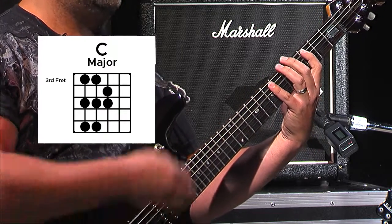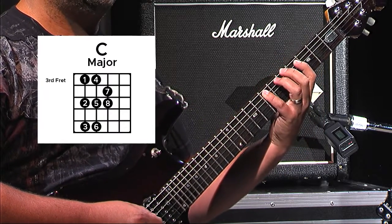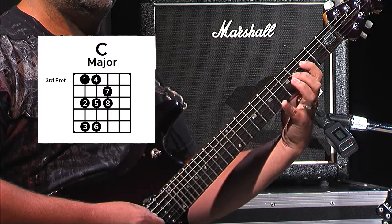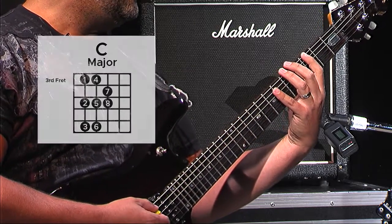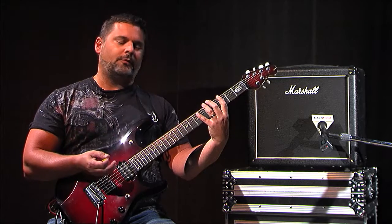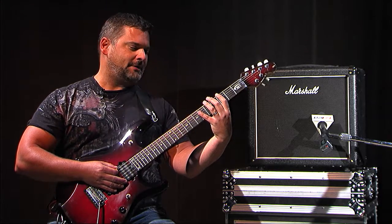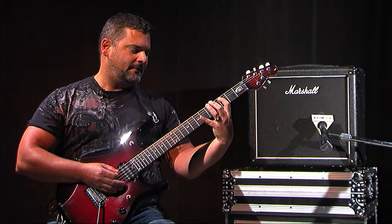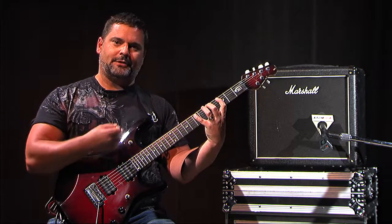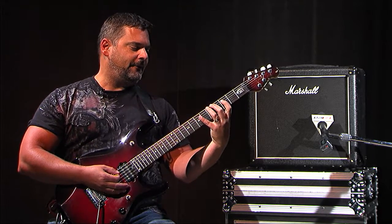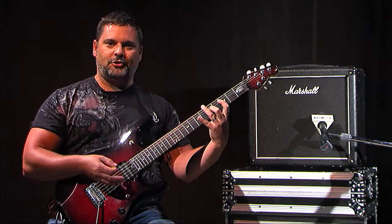So if we put a number with each one of those notes: 1, 2, 3, 4, 5, 6, 7, 8. A C chord would be built from the first note, which is C, the third note, which is an E, and the fifth note, which is a G.